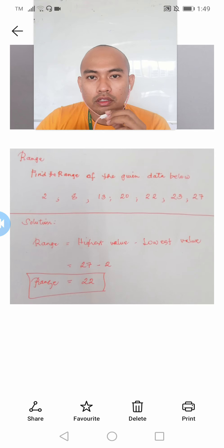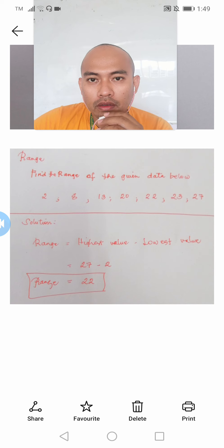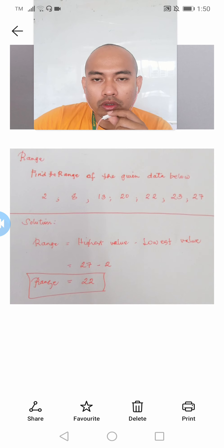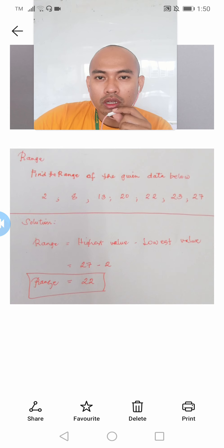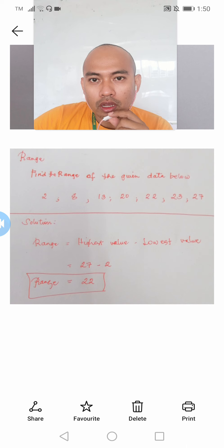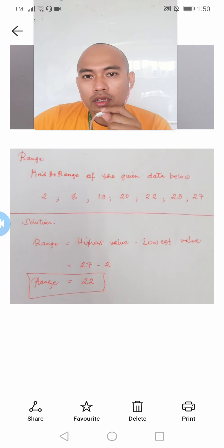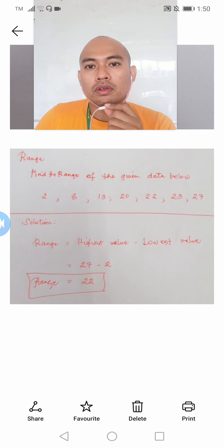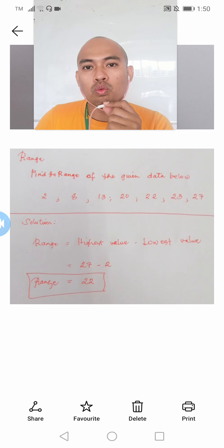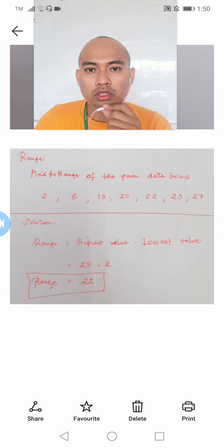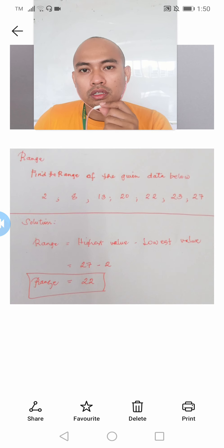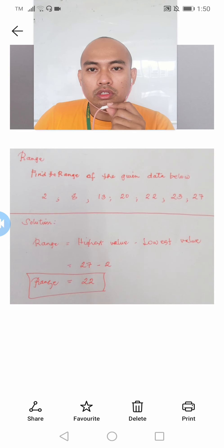Hello everyone, good day. This will be the continuation of my lecture regarding measures of variability. This video is more concentrated on the examples and applications of the formulae presented in the lecture about measures of variability. I have already presented in the previous video about the range, the MAD or the mean absolute deviation, and also the variance and the standard deviation, which are the tools we can utilize to know the variability or the spread of our data in our research study.